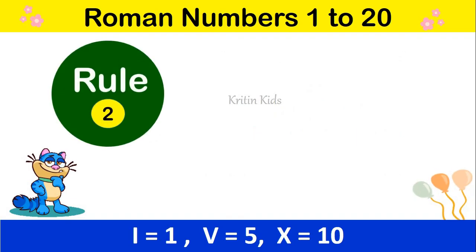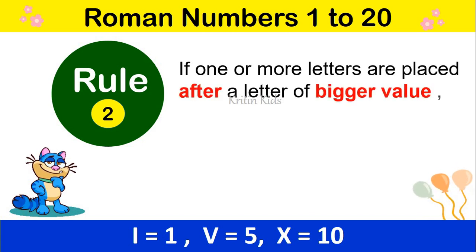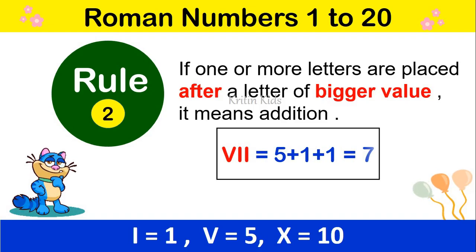Rule No. 2 says: if one or more letters are placed after a letter of bigger value, it means addition. For example, V, I, I — here V is 5 and I is 1. I has come after V, so we should add it. So 5 plus 1 plus 1 gives us 7.